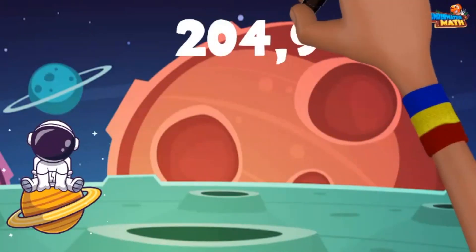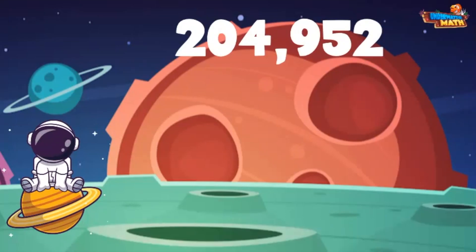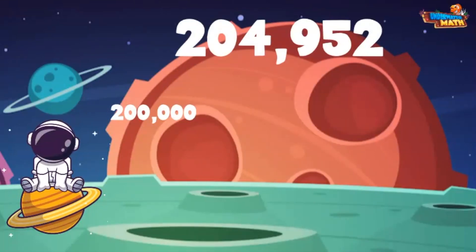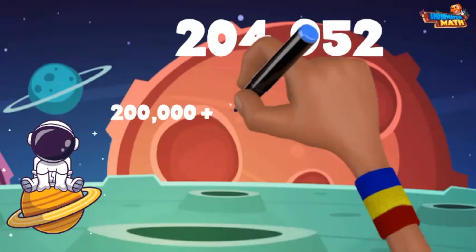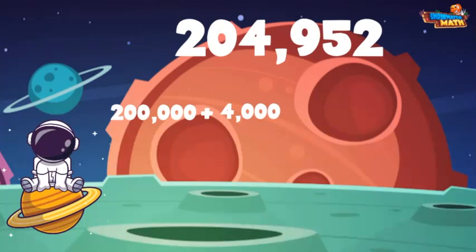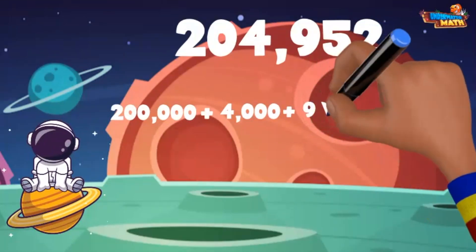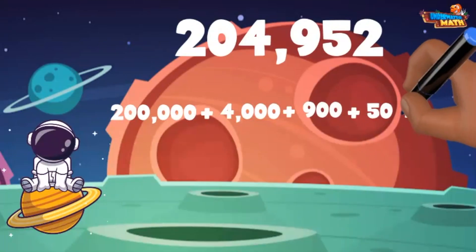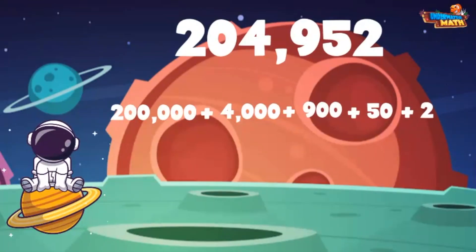This next number is pretty big: 204,952. There is a 2 in the hundred-thousands place to represent 200,000, a 0 in the ten-thousands place, and a 4 in the thousands place to represent 4,000. We can add 900 to represent the 9 in the hundreds place, 50 to represent the 5 in the tens place, and 2 for our 2 in the ones.